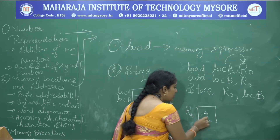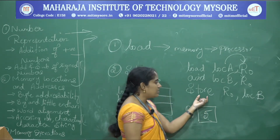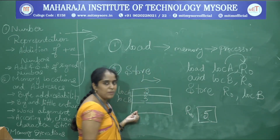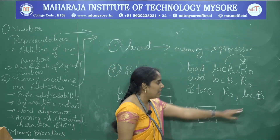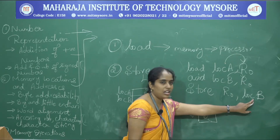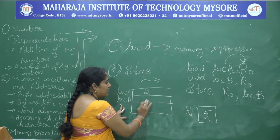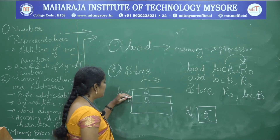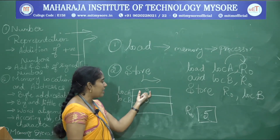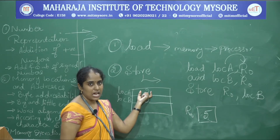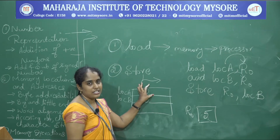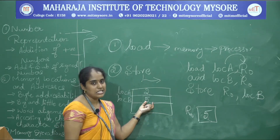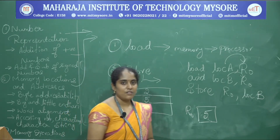After the add instruction, R0 contains 5. The store instruction copies R0's value (5) back into a memory location — for example, location B. In the load instruction the memory is untouched, but in the store instruction the memory location may be replaced with the result. In the next session we will discuss more.